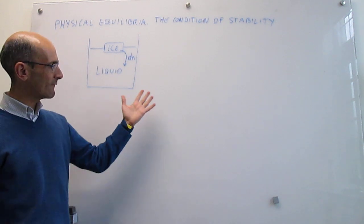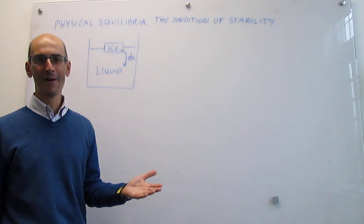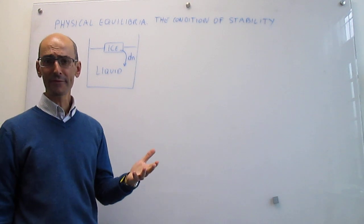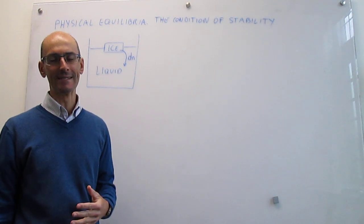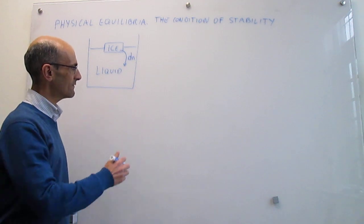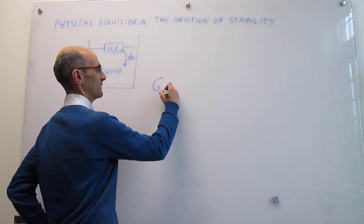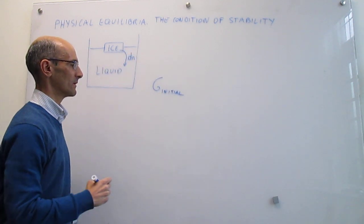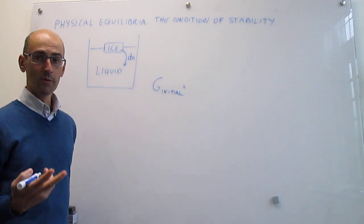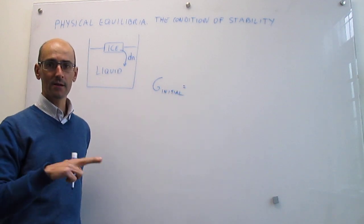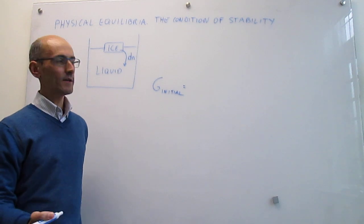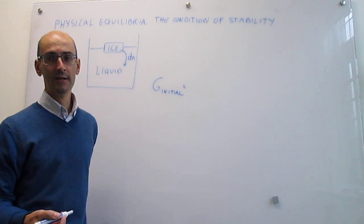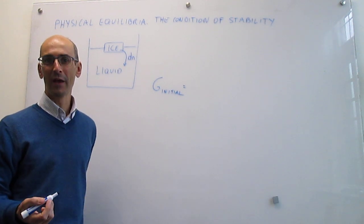The only thing we have to do then is calculate what the Gibbs energy is before that infinitesimal amount of ice turns into the liquid, then after, take the difference, and figure out what the sign of that is. So let's figure out what the total Gibbs energy is before the process takes place, right before this tiny little bit of ice turns into the liquid. So here what we have is two components: we have the solid, the ice, and then the liquid. The total Gibbs energy of the system is going to be the sum of the Gibbs energies of the components, and again we have two.